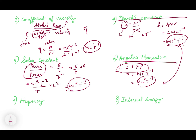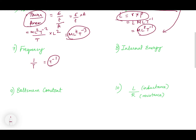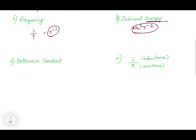Similarly, in the last class I told you that torque, all forms of energy, heat, and work done all have the same dimension — ML²T⁻². Remember this. Now frequency: frequency is one by time, so it is T⁻¹. That is the dimension of frequency. For internal energy, you know that energy, work done, torque, heat, or calorie — everything has the same dimension ML²T⁻².